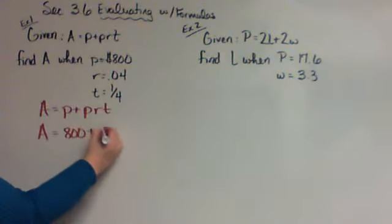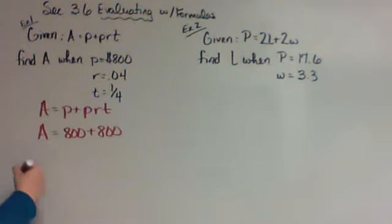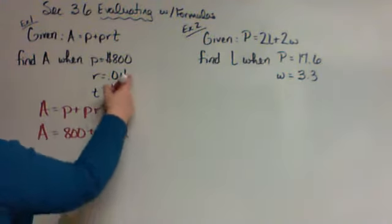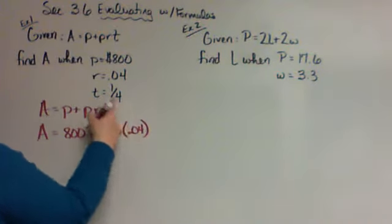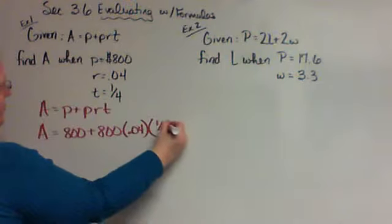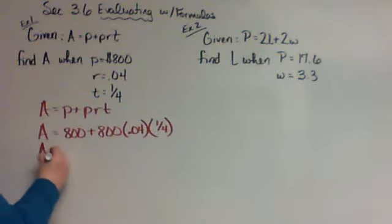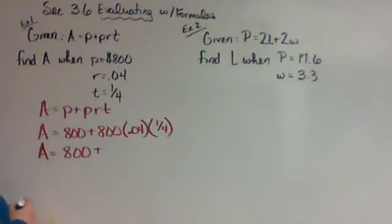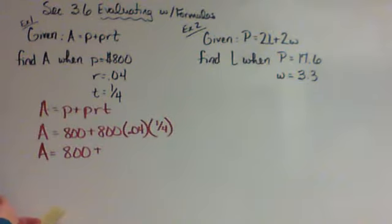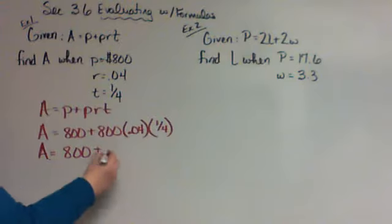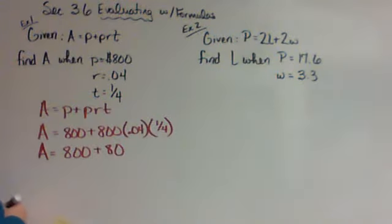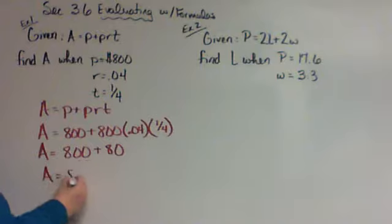The first thing I'm going to do is fill in what they told me. This P is 800, plus 800 times R which is 0.04, and T is 1/4. Since you'll be using a calculator, I'd change the 1/4 to 0.25. So we have 800, and then 800 times 0.04 times 0.25 gives you 8, so A equals 880.